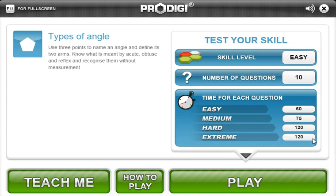So point out things like it starts off at the easy level, there are 10 questions in each round, each student gets different sets of 10 questions, there are timers associated with the questions: 60 seconds for easy, 75 seconds for medium, and 120 seconds for extreme and hard questions.